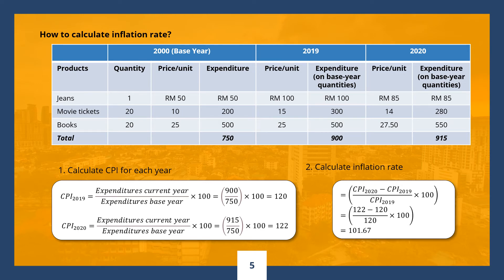The next step is to calculate the rate of inflation from 2019 to 2020. The inflation rate is how much the CPI increases expressed as a percentage. We take the CPI for 2020 minus the CPI for 2019, divide by the CPI for 2019, and multiply by 100. That is, 122 minus 120, over 120, multiplied by 100, giving us an inflation rate of about 1.67%. To recap, we calculate the inflation rate between two years by taking the CPI in the second year, subtracting the previous year's CPI, dividing by the previous year's CPI, and multiplying by 100.